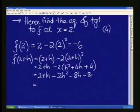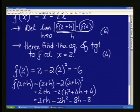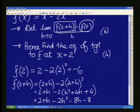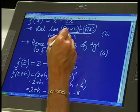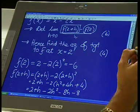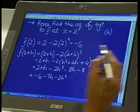We get 2 plus h minus our 2h squared minus 8h. If I multiply those two and then minus 8. If I quickly add my like terms minus 8 and this 2 gives me minus 6. There I have minus 7h and minus 2h squared.